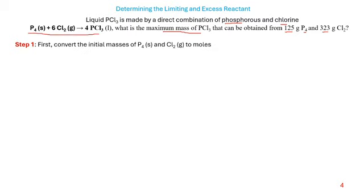The first thing we need to do is check the reaction to ensure it is well balanced — that the number of elements on the reactant side equals the number on the product side. We have 4 phosphorus on each side. For chlorine: 6 × 2 = 12 on the reactant side, and 4 × 3 = 12 on the product side. The reaction is balanced.